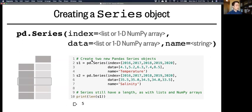So in this example, we created two series, S1 and S2, with five years as the indices, and corresponding temperature and salinity values as the data. And we've added those names at the end here. Also note that you can get the length of a series using the len function, just like with lists and arrays.